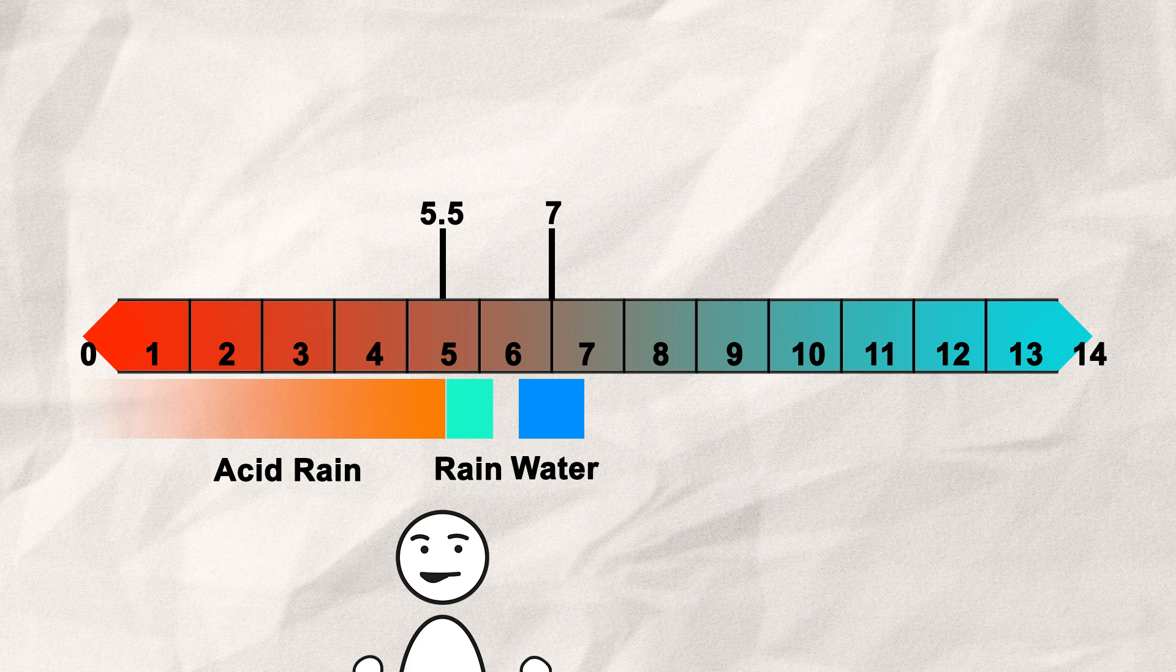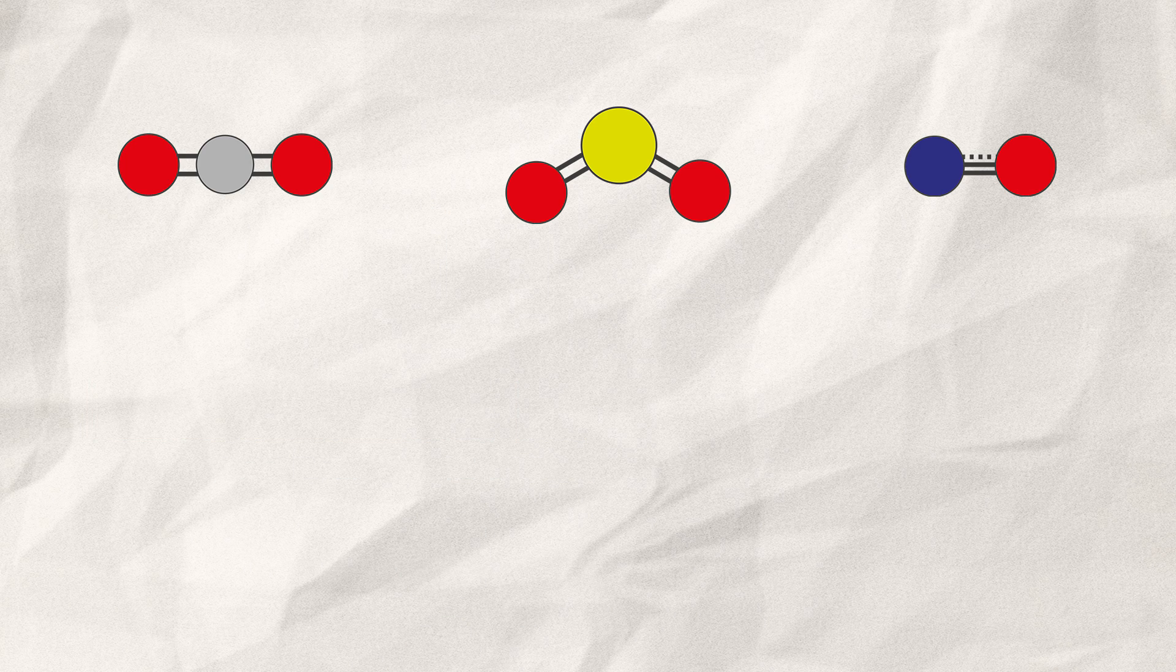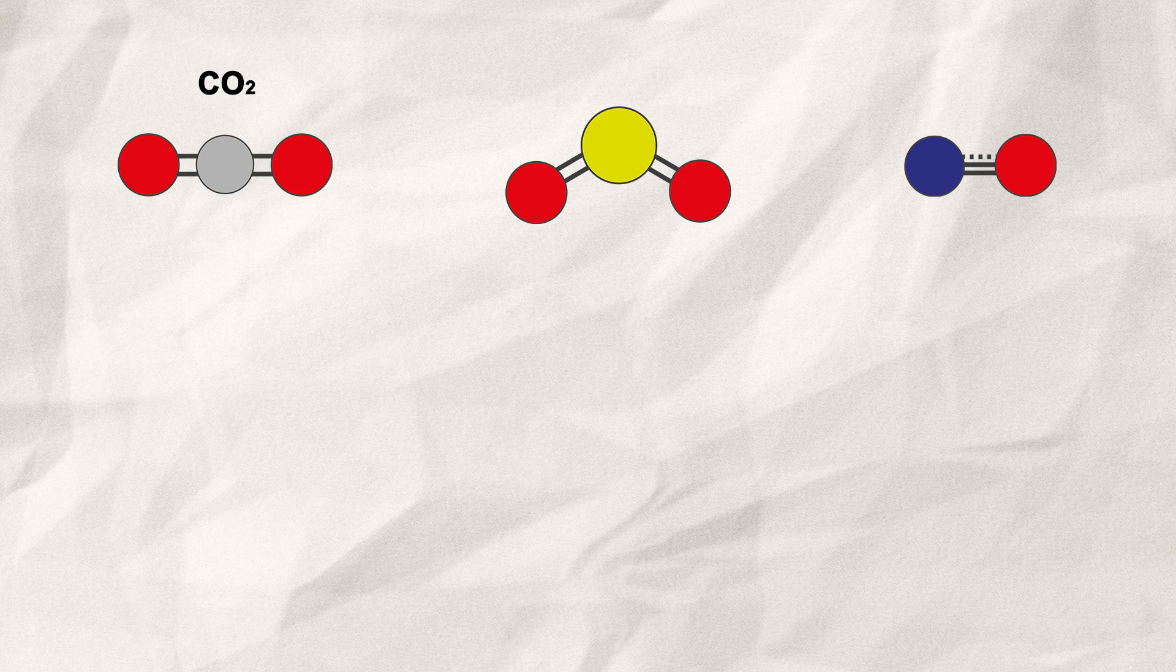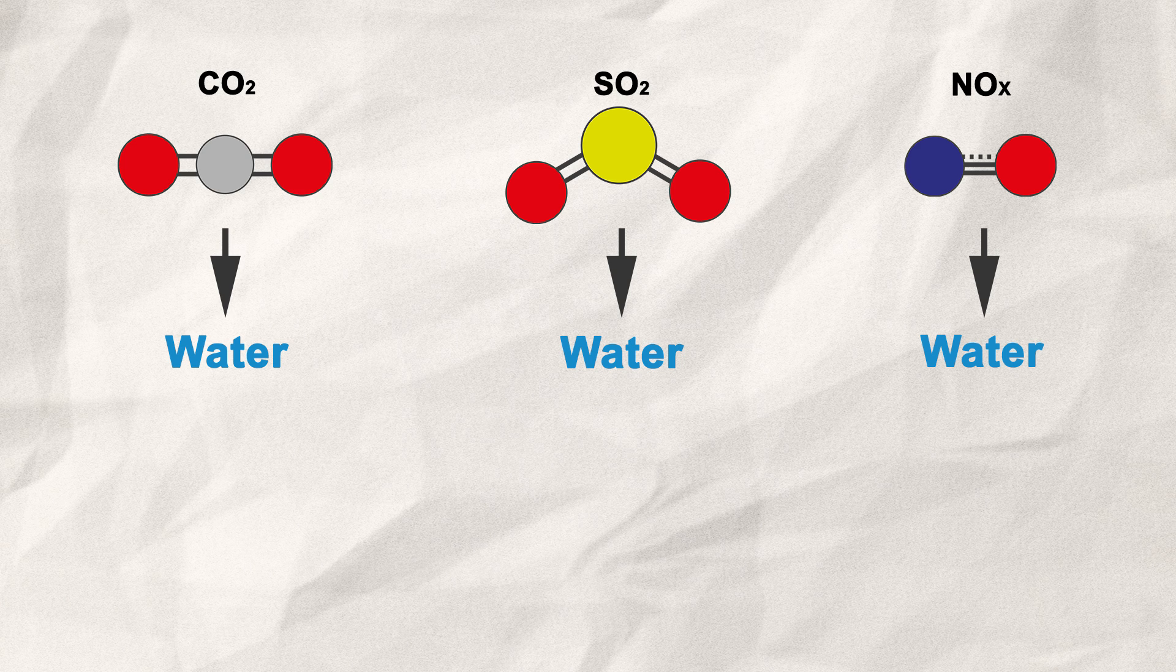But how does water get acidic in the first place? The answer is very simple, mainly because of us humans. Three chemicals created by our daily life are particularly responsible: carbon dioxide, sulfur dioxide, and nitrogen oxides. Those three react with water in the air to form acids that will rain down back on the ground.